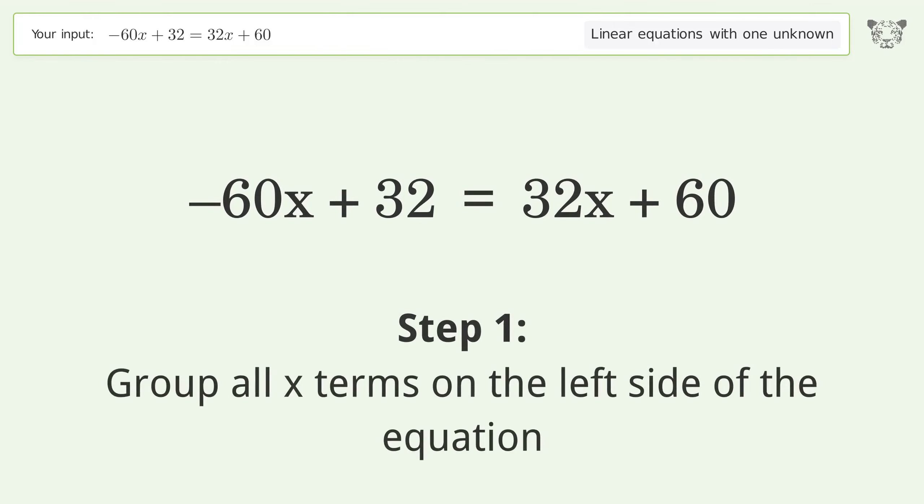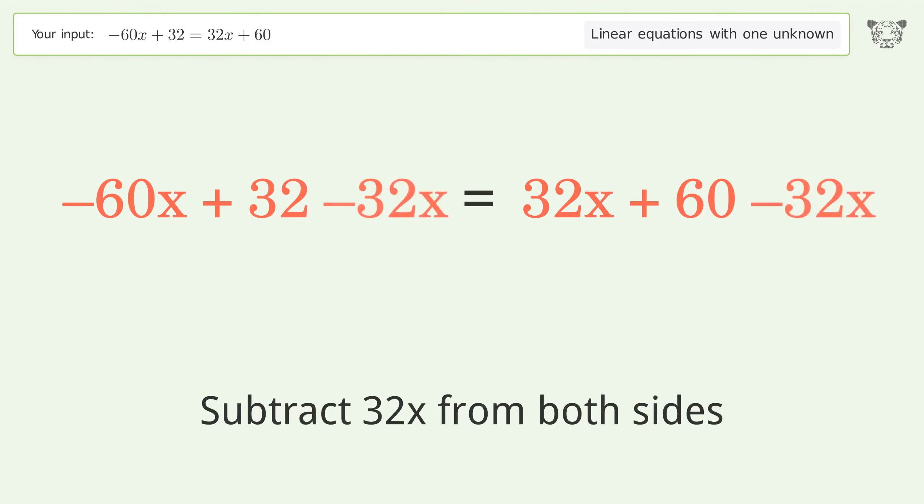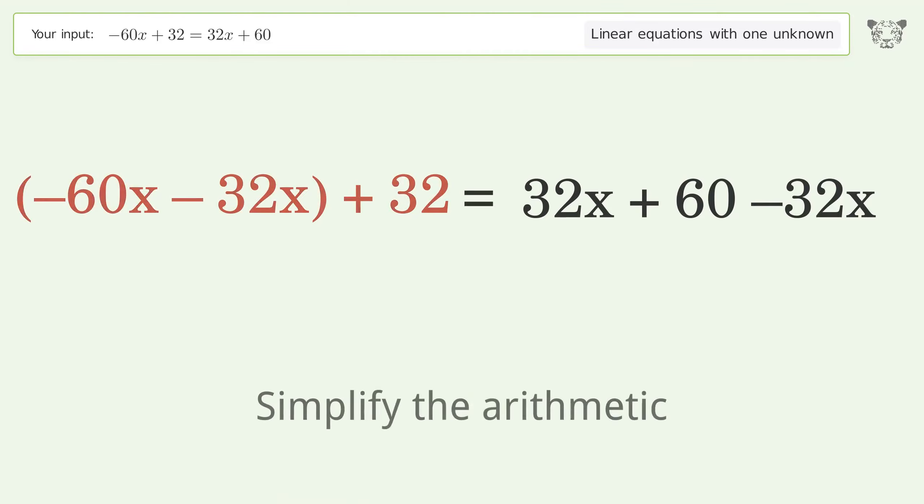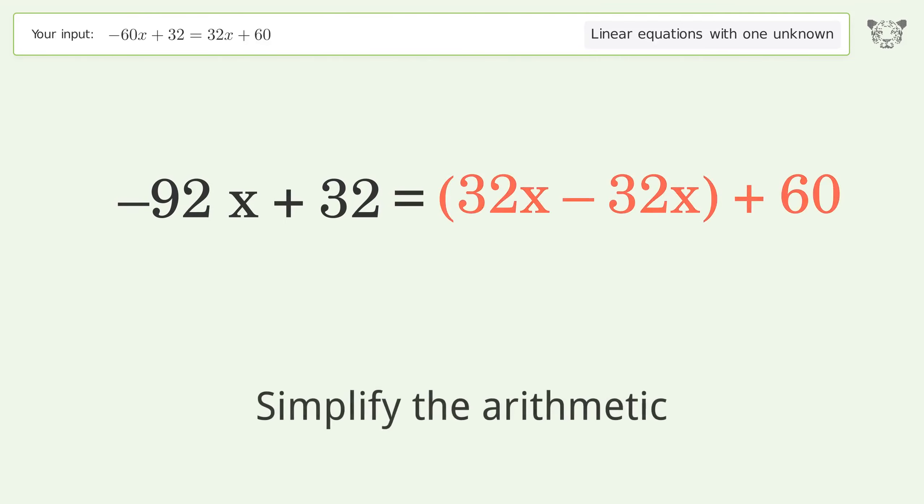Group all x terms on the left side of the equation. Subtract 32x from both sides. Group like terms. Simplify the arithmetic. Group like terms. Simplify the arithmetic.